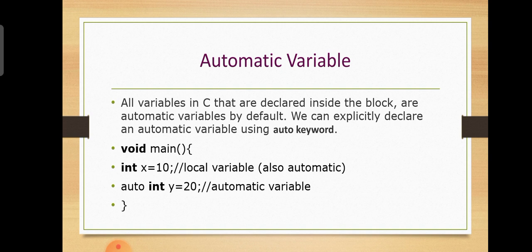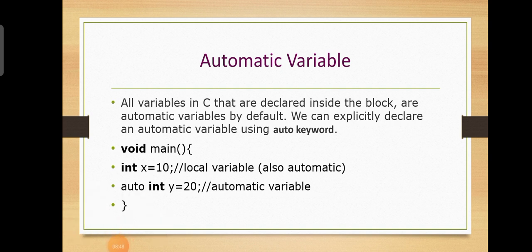This is the Automatic variable. All variables in C that are declared inside a block are automatic variables by default. In C programming language, all variables declared inside a block are automatic by default.